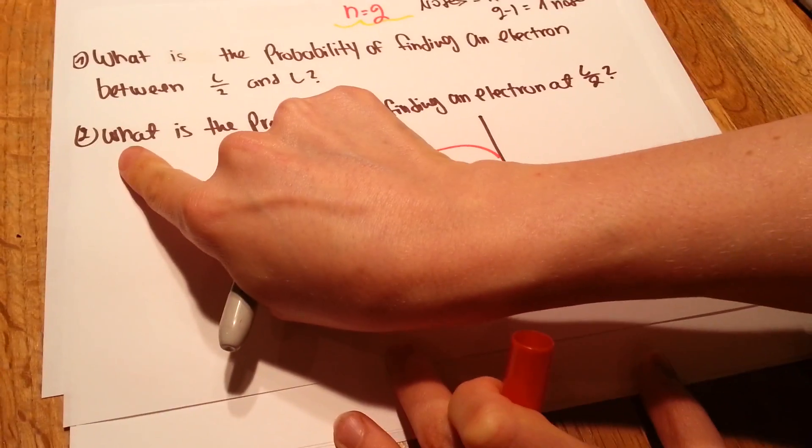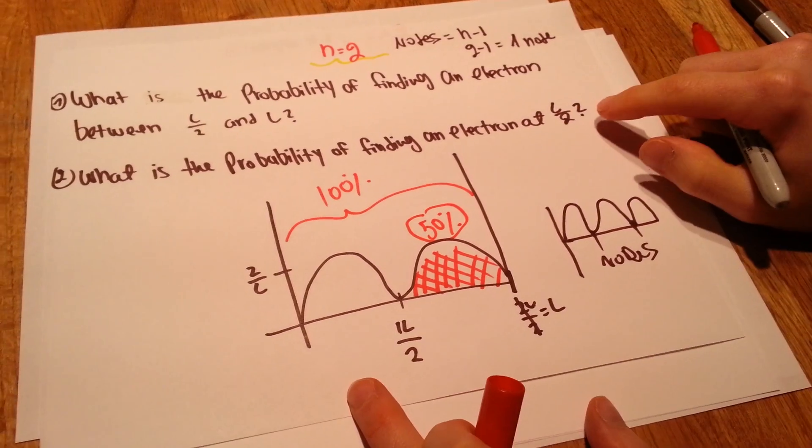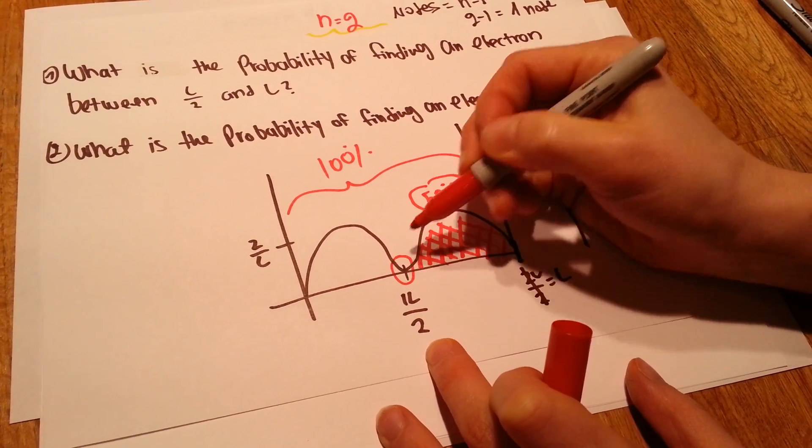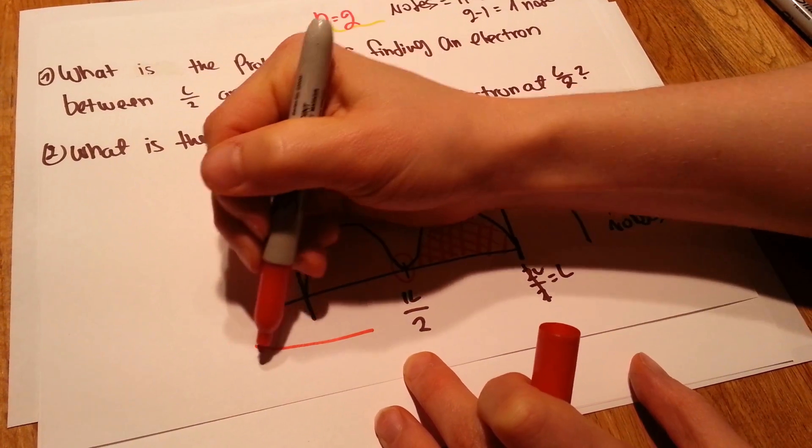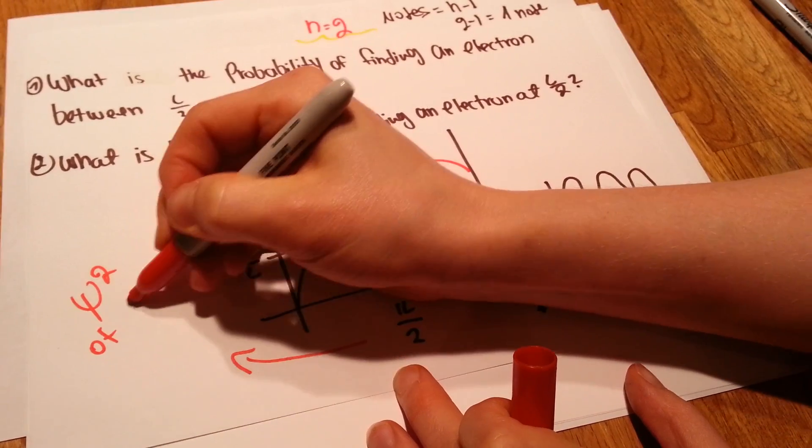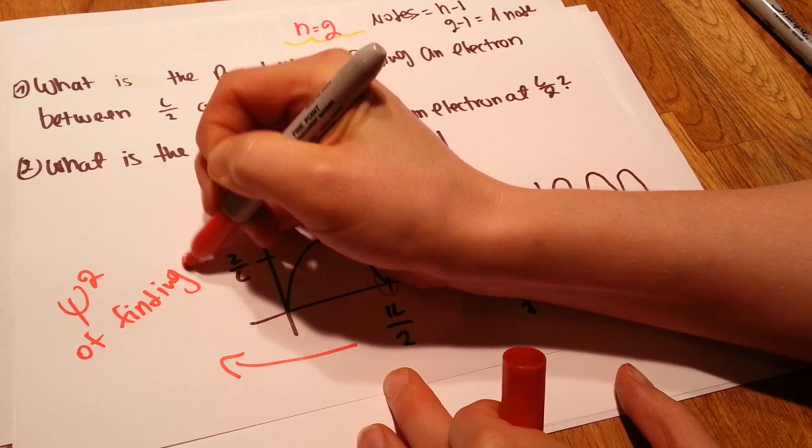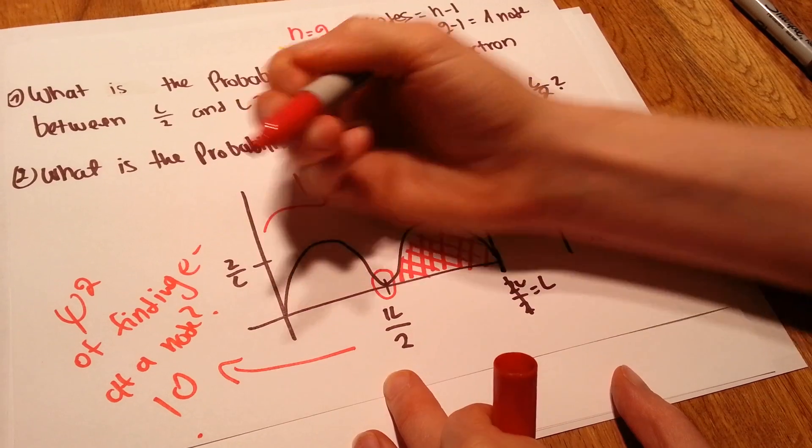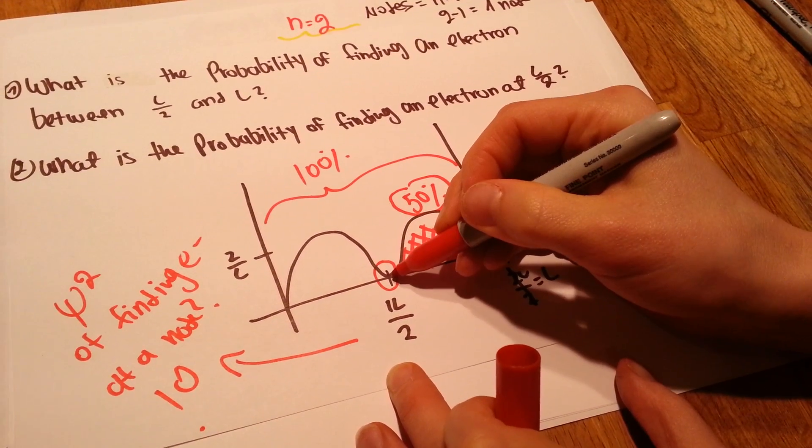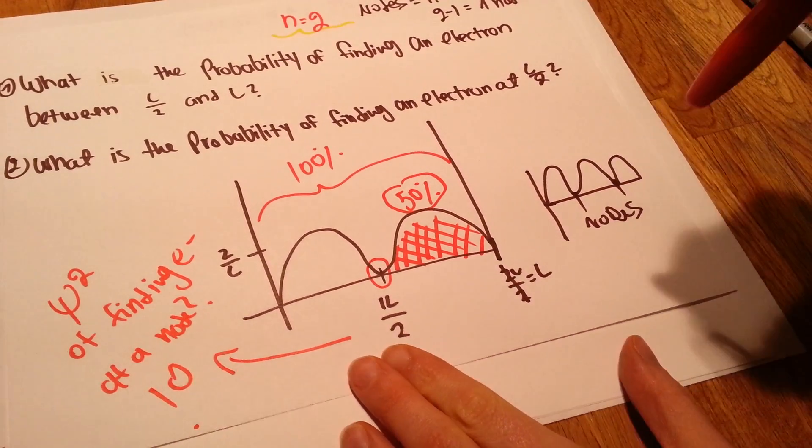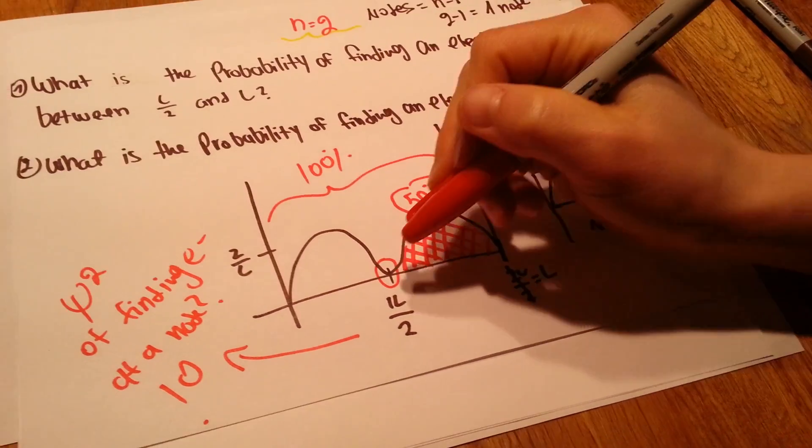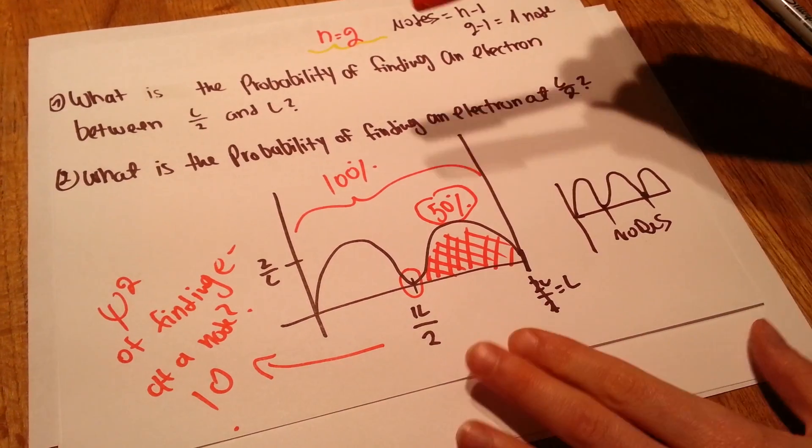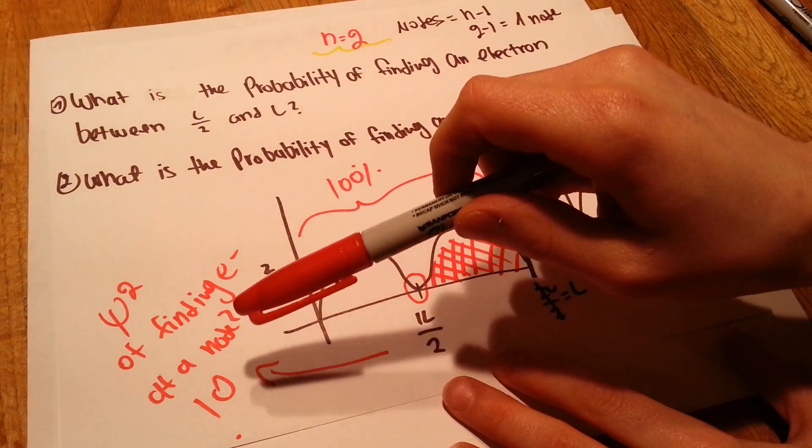And what is the probability of finding an electron at L divided by 2? Well, this is L divided by 2. What is the probability of finding here? Well, what is the probability, what is the psi squared of finding an electron at a node? Hopefully you know it's 0. Not only that you can see it from the graph, there is nothing here. We know it's like chemistry 101. There are no electrons at nodes. Zero probability of finding an electron at a node. So this is a complete question with the answers 50% and 0.